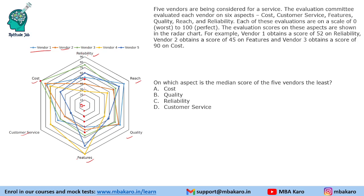You are not supposed to calculate all these values. If you make a table of five vendors across six parameters, you will have 30 values to fill in, and writing those values alone would take a lot of time. Instead of writing these values, we will observe the values and answer the questions.